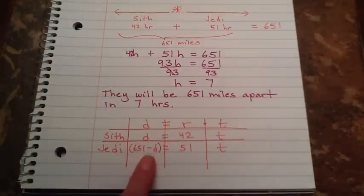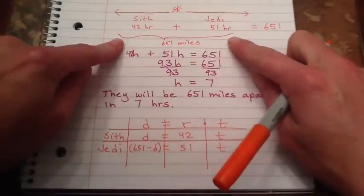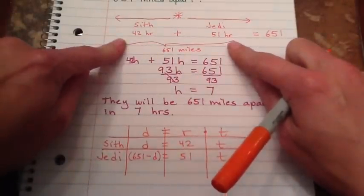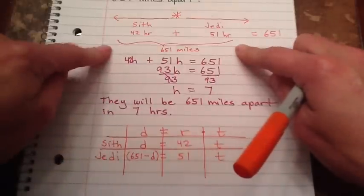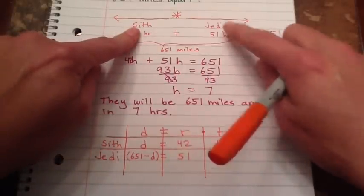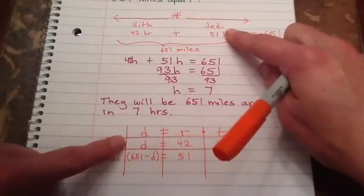It's not D minus 651. It's this 651 miles. That's why even setting up a picture with a chart would help you. This 651 miles subtracting the Sith or subtracting the Jedi gives me the other.